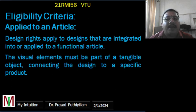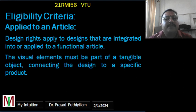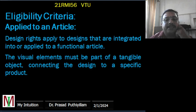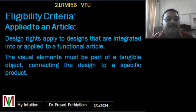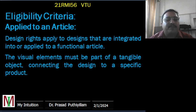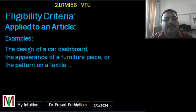Another eligibility point is 'applied to an article' — design rights cover designs that are part of a functional item or article. The visual elements must be connected to a tangible object, linking the design to a specific product. For example, the design of a car dashboard, the appearance of a furniture piece, or the pattern of a textile are examples where design is applied to functional articles.